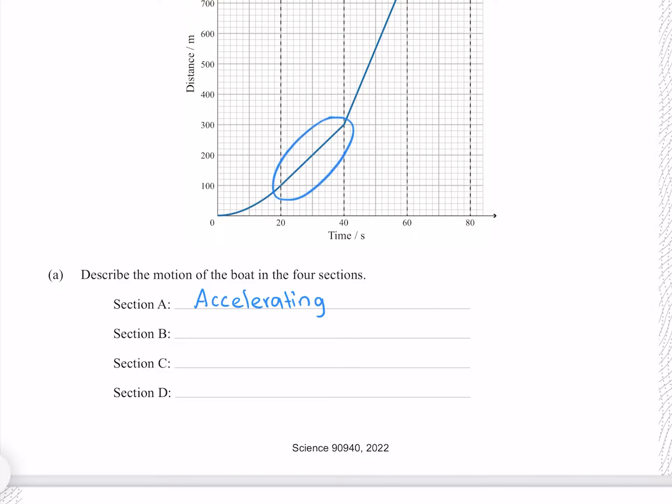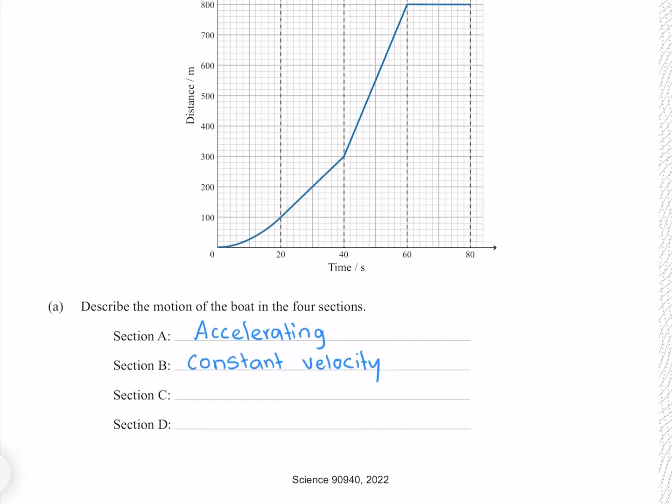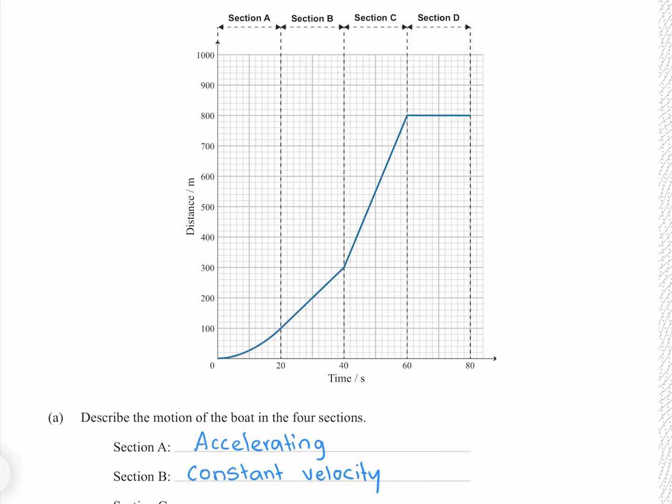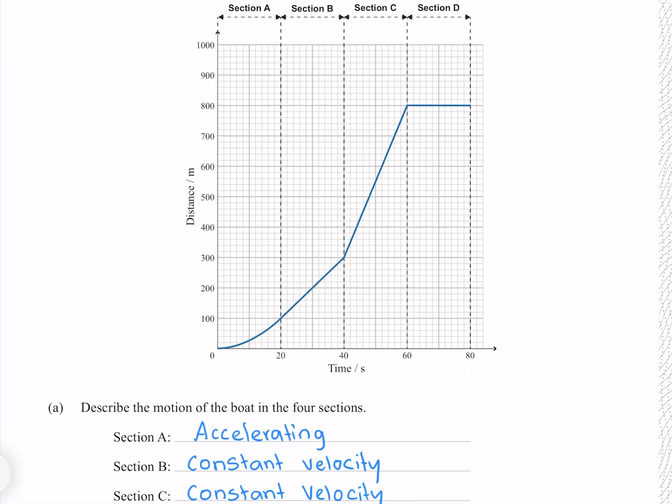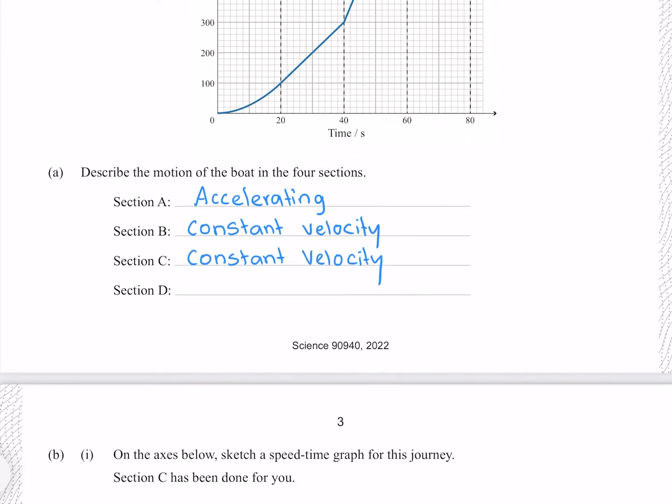In section B we see a straight line upwards with a slope that isn't changing, meaning that the velocity isn't changing, meaning that we have a constant velocity. In section C we have the same situation but with an increased slope. In section D we see a flat line across indicating that the distance isn't changing, which means our boat must be stationary.